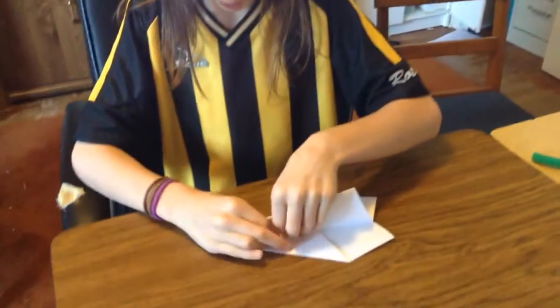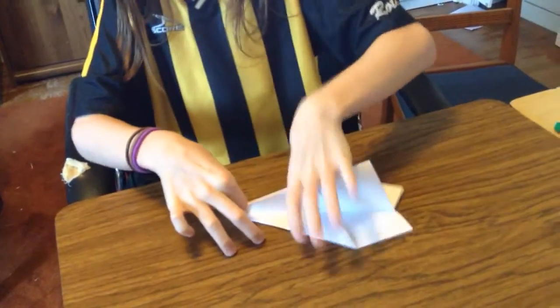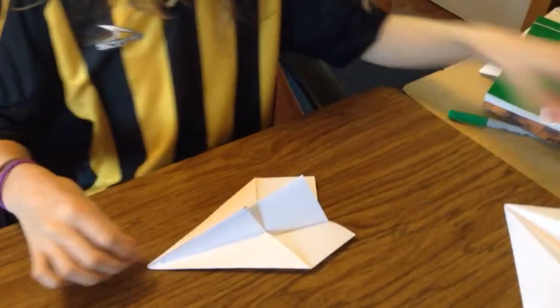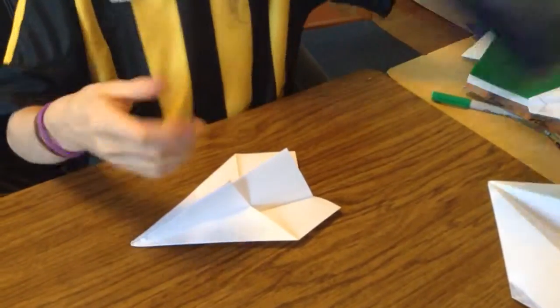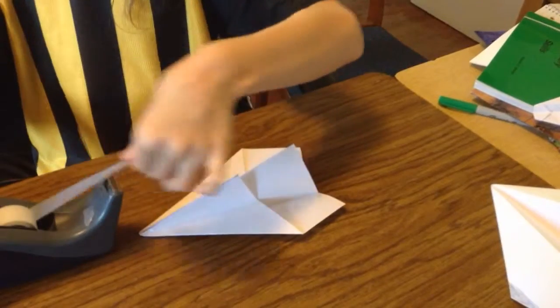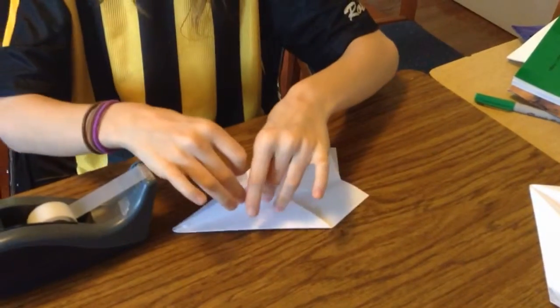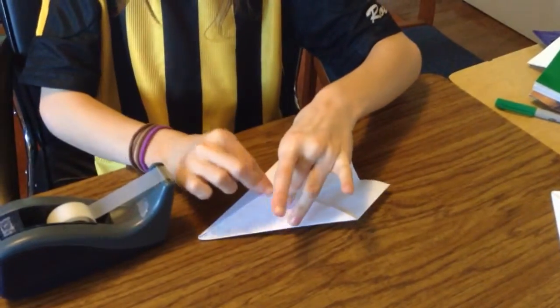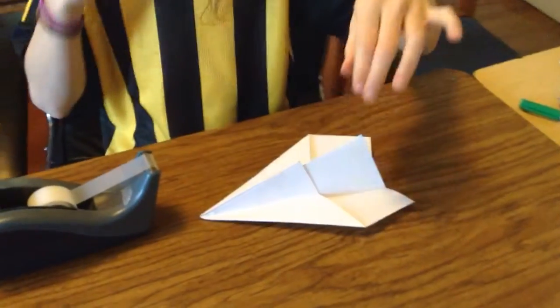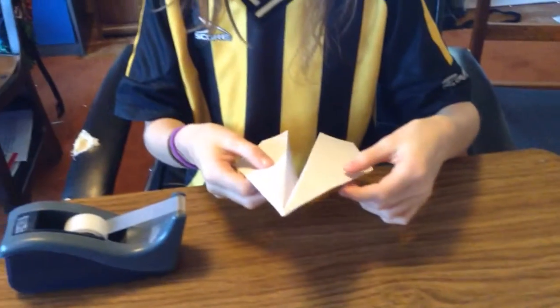Then you go in the center, fold down the wing and open it up. And for strength, you can add a piece of tape right here to keep it from folding open a whole lot.